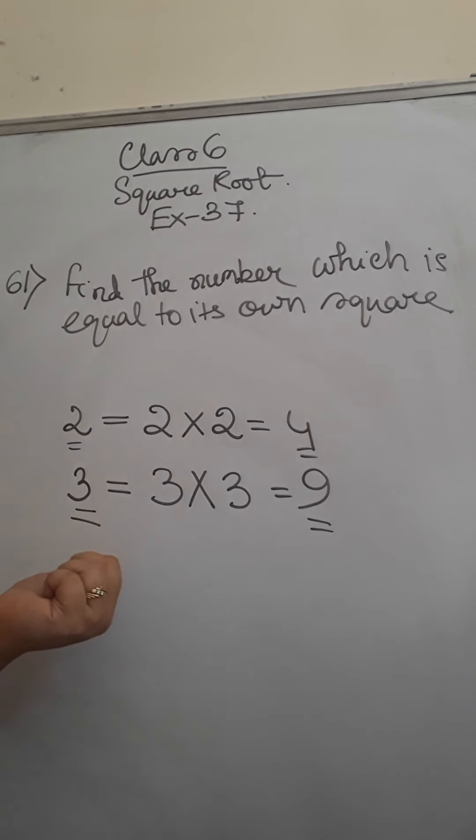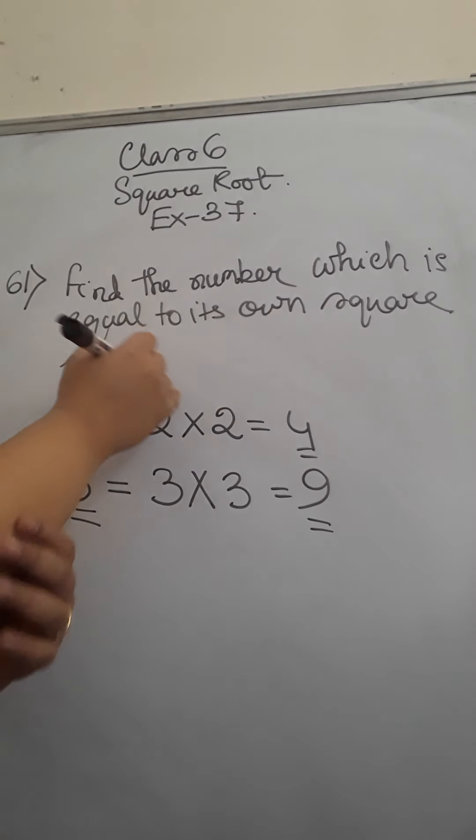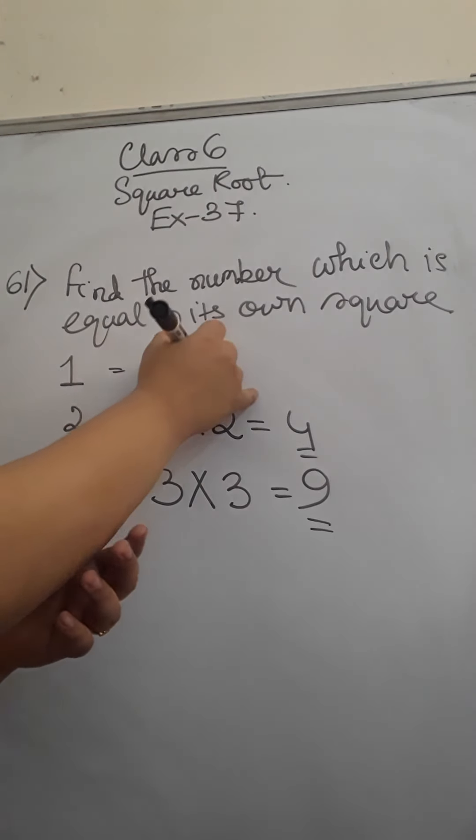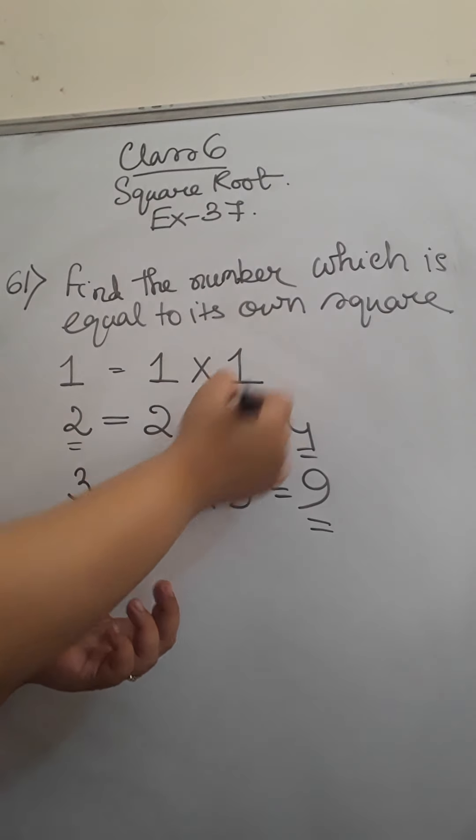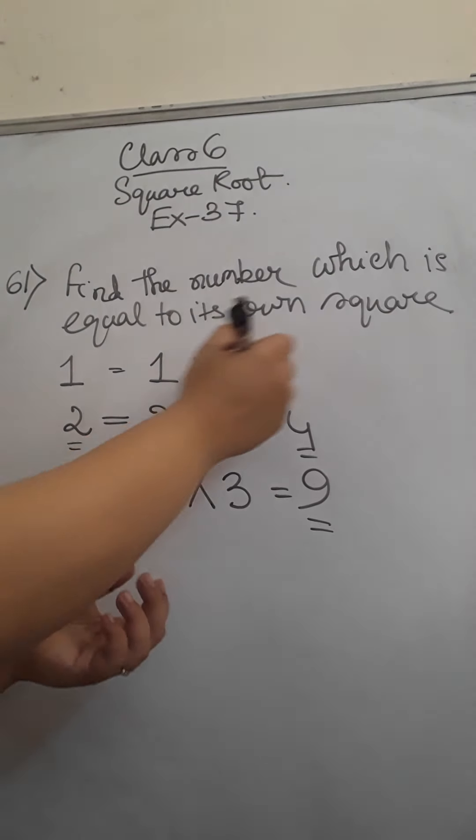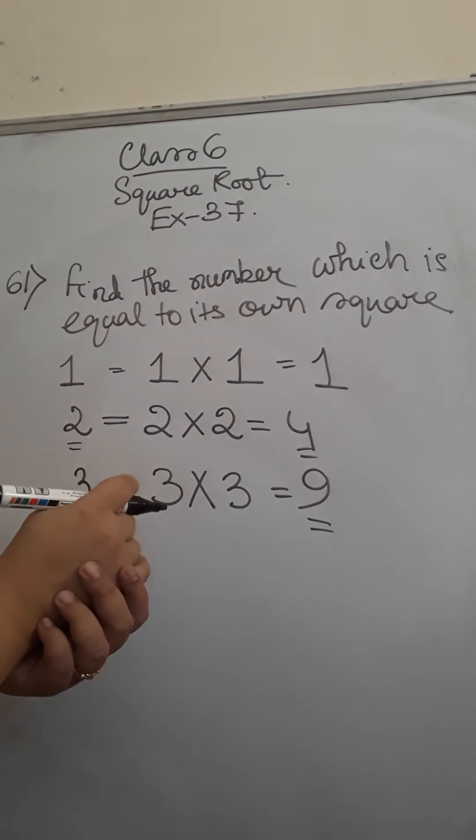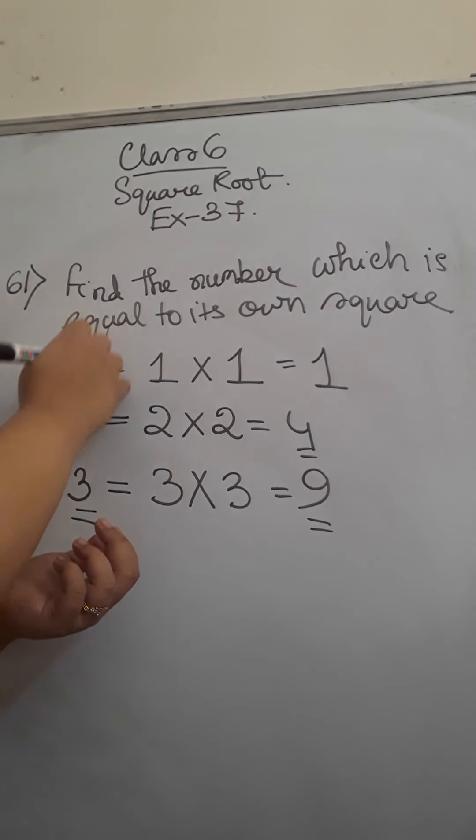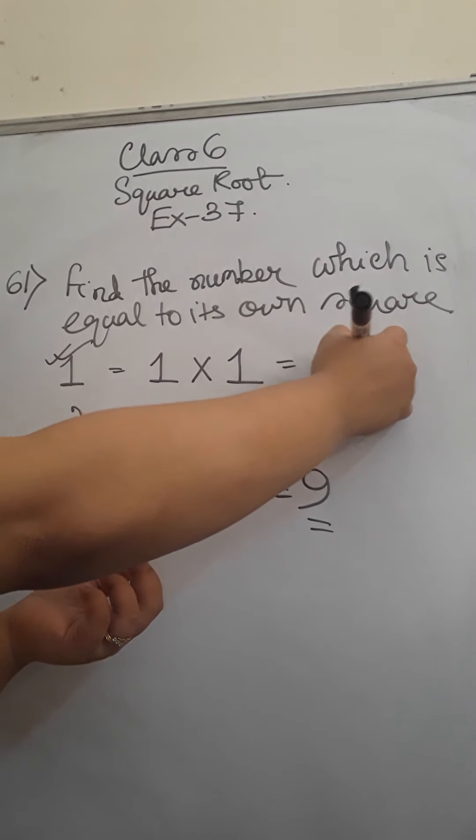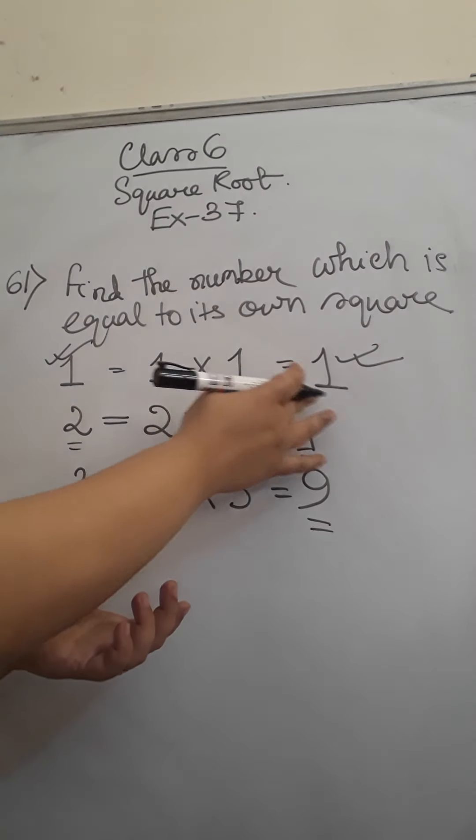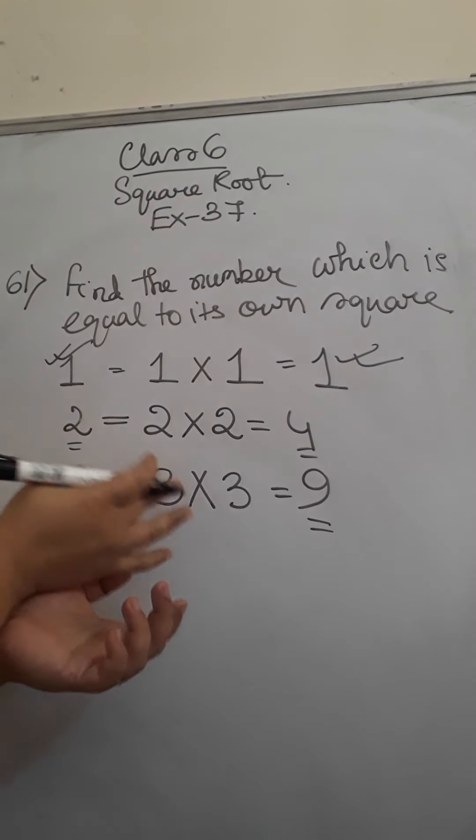How can it match with the initial number? But there is only a single number that is 1 whose square, if you take—square means multiplying the same number—and 1 into 1 returns you 1 only. So 1 is the only number whose square, after squaring also, matches with the number itself.